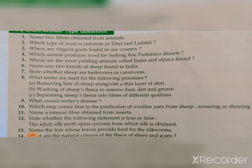Question five: Where are the wool-yielding animals called llama and alpaca found? They are not found in our country — they are found in South America. Question six: Name any two breeds of sheep found in India. The first one is Lohi and the second one is Marwari. There are many other examples in the book, you can write any one.